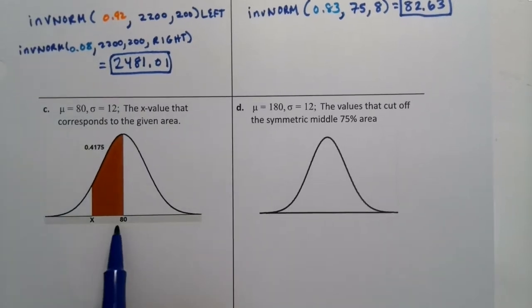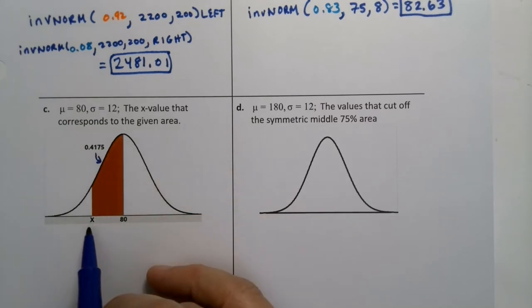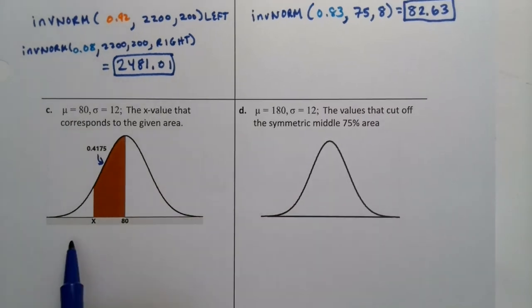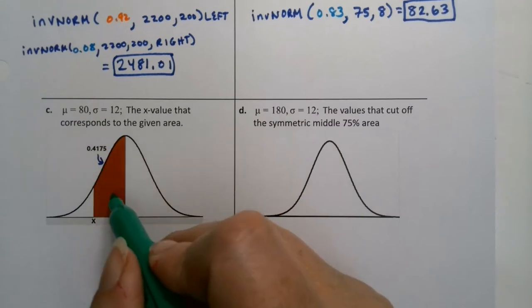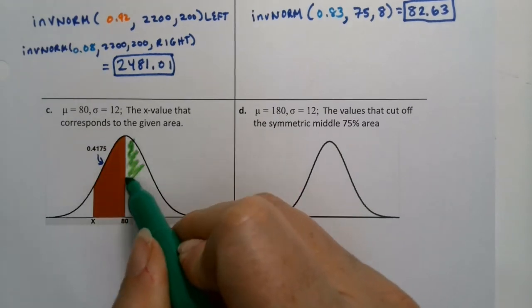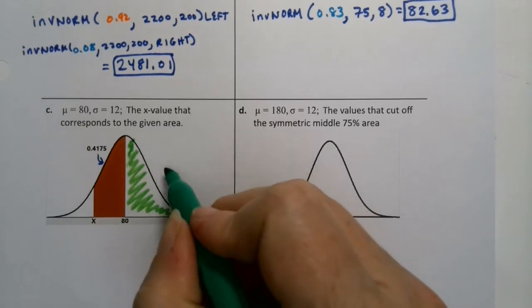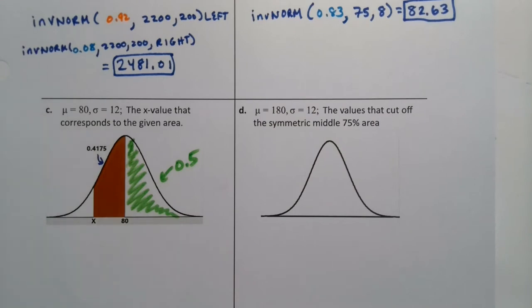All right, next. Oh, another sneaky one. Oh, this is mean. All right, so we have the center right here at 80, right there, and they're telling us this region right here is 0.4175, and we're looking for this x value. So obviously, it's going to be an inverse norm. The problem is I don't have this left tail area. I don't even have a right tail area. What I have is this section right here.